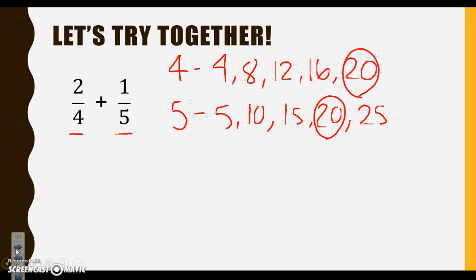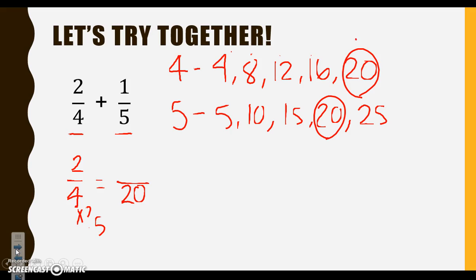Let's start with 2 fourths. We need to turn that into a fraction with a denominator of 20, because that multiple works for both of our denominators. We say 4 times what gives me 20 — the basic fact is 4 times 5, or counting: 1, 2, 3, 4, 5 — it was the fifth multiple. Whatever we do to the bottom, we have to do to the top. 2 times 5 is 10. We have our converted fraction.